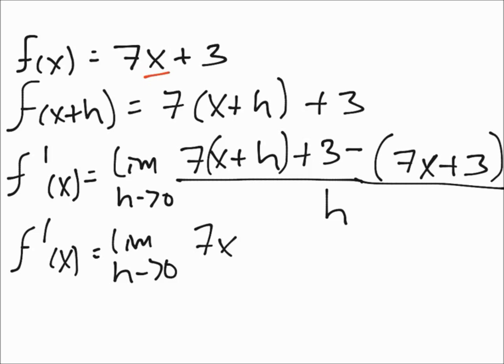We have 7x + 7h + 3 - 7x - 3 over h. So this goes with this, this goes with this. We have 7h over h. I'll do that in the next place.